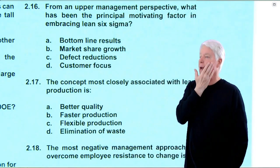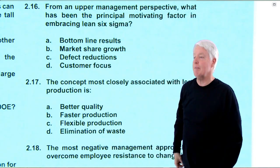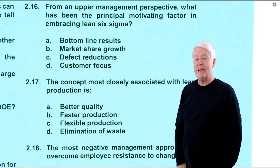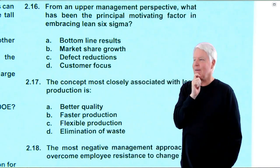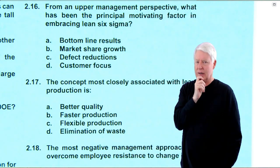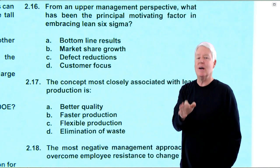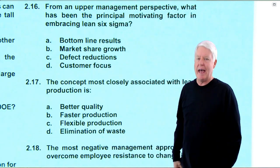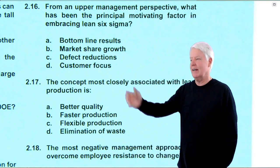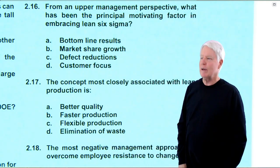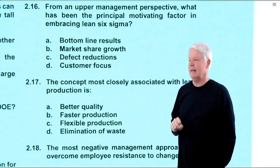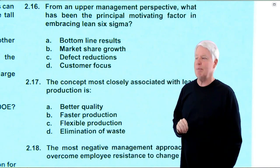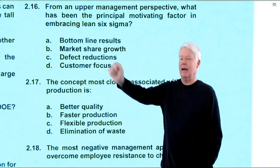Here we are at question 16: from an upper management perspective, what has been the principal motivating factor in embracing lean Six Sigma? Upper management's biggest concern is meeting financial goals — they have to create profit. So it's all about bottom line results. Whenever you see upper management, think bottom line results; they have to make those numbers work or they won't have a job.